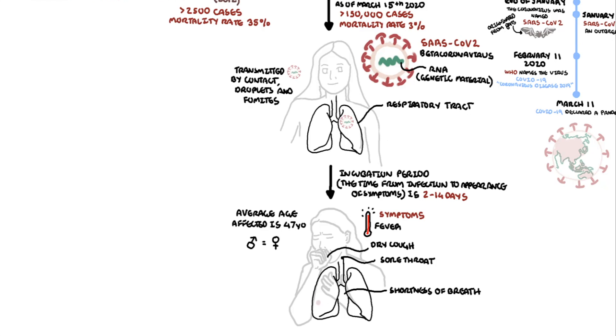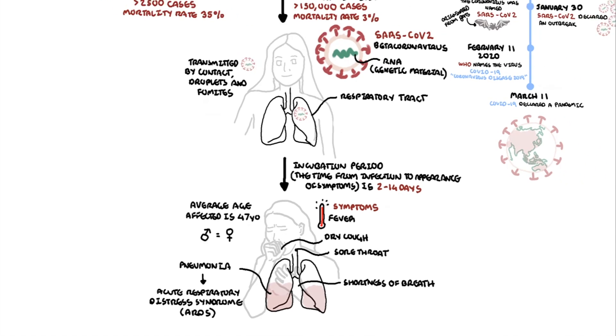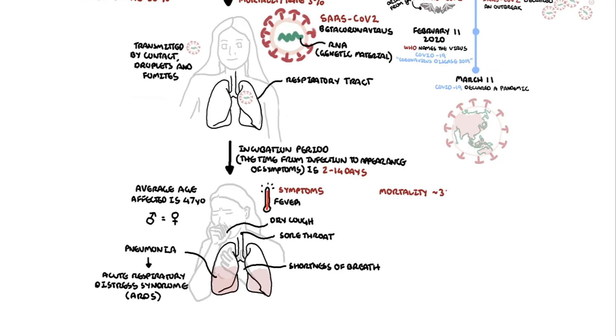These symptoms may progress, and people may develop pneumonia and even acute respiratory distress syndrome requiring intensive care. The mortality rate, as mentioned, for COVID-19 is 3%, roughly. But this increases with age, especially for those above 60, but more significantly for those above 80 years of age. Mortality rate also increases with comorbidities such as diabetes, heart disease, kidney disease.